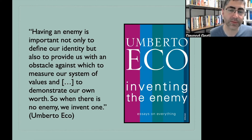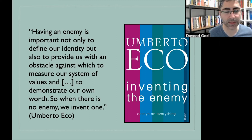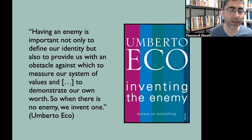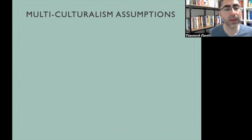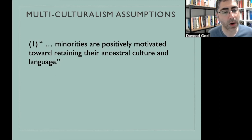Back to multiculturalism: obviously it wants to combat animosity, to combat people identifying each other in prejudicial or enemy terms that produce more and more conflict. Multiculturalism wants to create peace while maintaining different cultural identities. We don't want complete assimilation — we don't want minority groups to completely disown who they are — but we also want peace and understanding. There are two major assumptions discussed in this chapter. First, minorities are positively motivated towards retaining their ancestral culture and language.